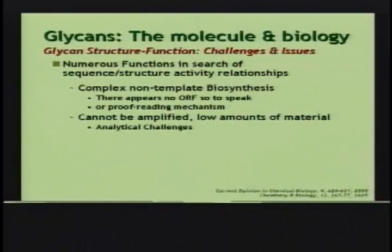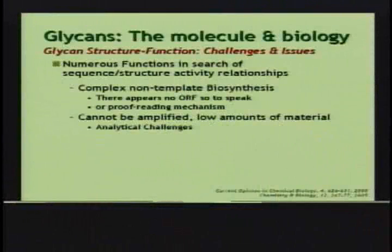Equally important, you have proofreading processes for DNA — that doesn't exist for carbohydrates. So, what happens as a consequence is, given the fact that there isn't a reading frame, carbohydrates are synthesized as an ensemble with a variety of different structures, and all these structures get displayed on the cell surface or on a protein. That really begs the question: what are the relevant structures, what is the distribution of the kind of structures, and hence what the functional consequences are. Another important point is the fact that they cannot be amplified.